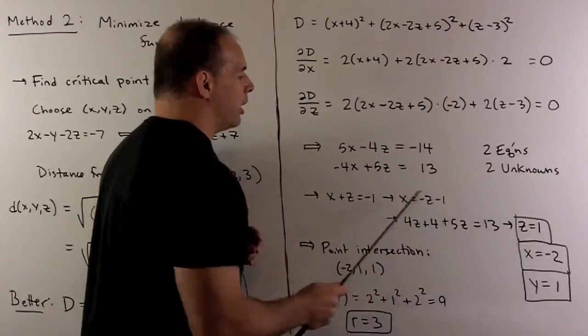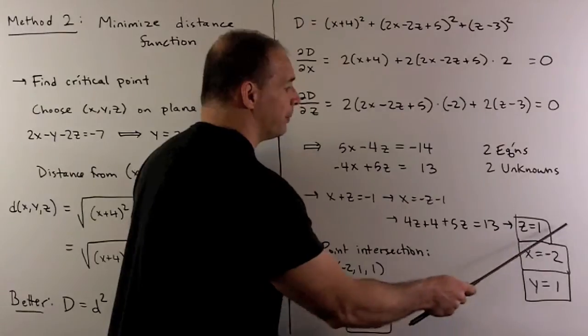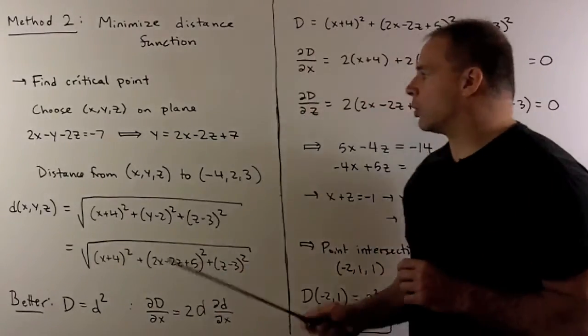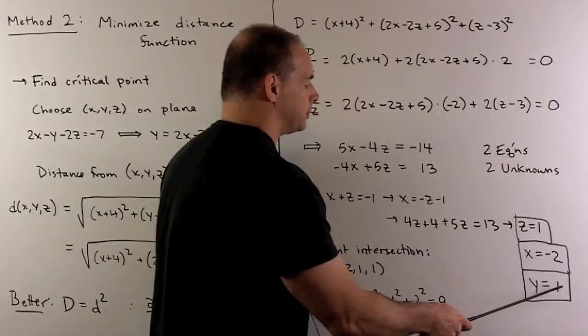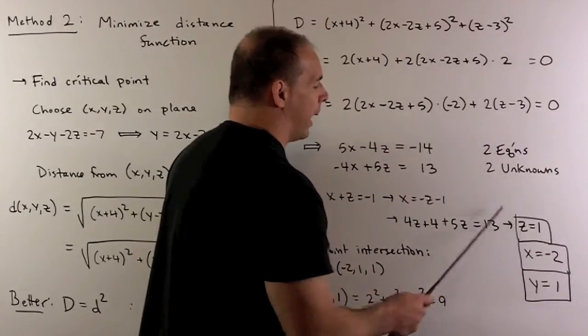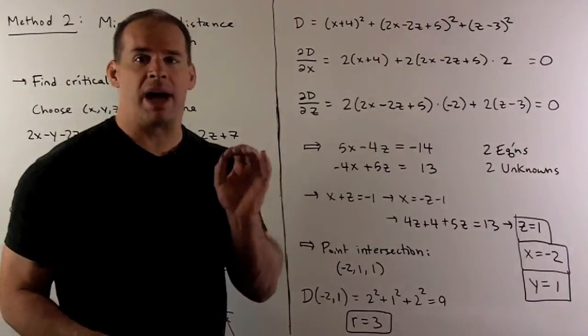Now, if I take that one and put it into here, we get x equals minus two. And then I can take these, put them into our equation for y, and we get y equals one. So this is going to be the point where our tangent plane and our sphere intersect. That minimizes distance.